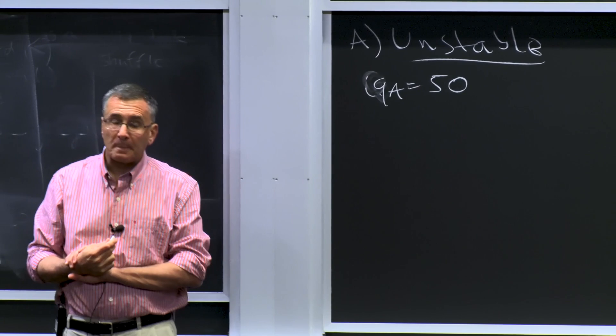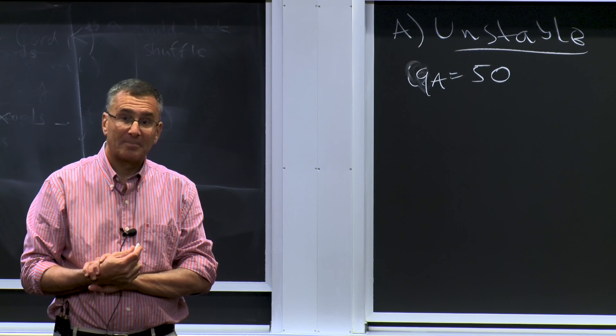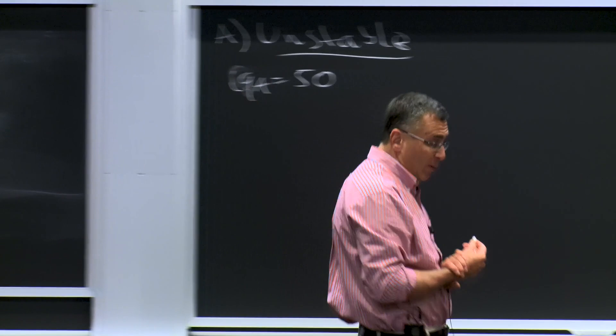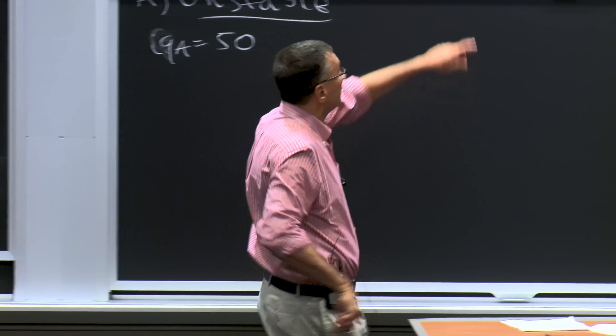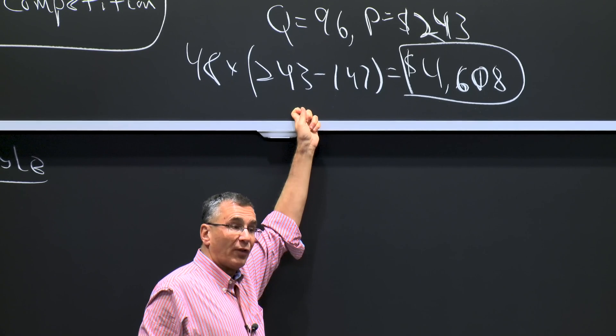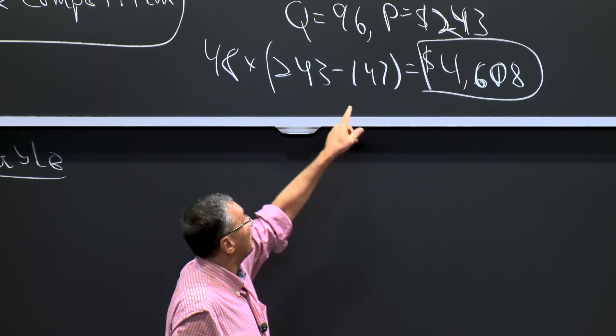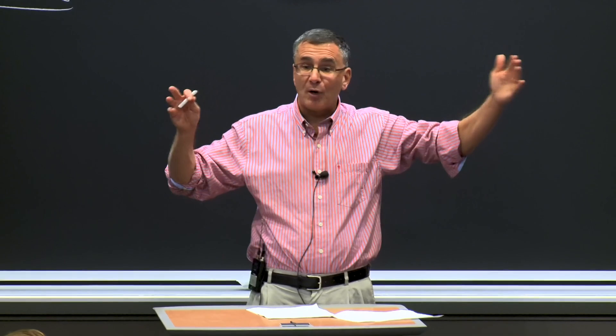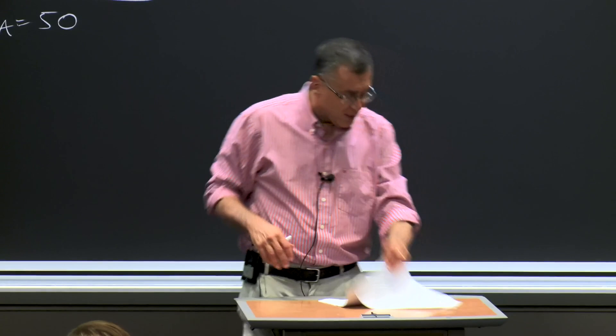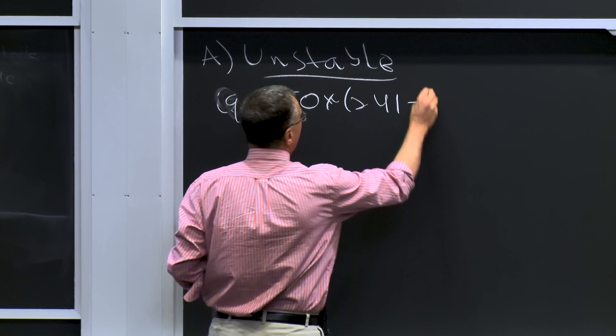What's the price if they're going to do 50 flights? The price was $243 when they were at the monopoly level. Now they're doing two more flights, adding two flights to the total. There used to be 96 flights total; now it goes to 98. So the price falls to $241. Their profits are now 50 times ($241 minus $147), or $4,700. Their profits have gone up.